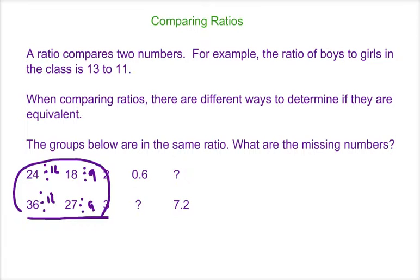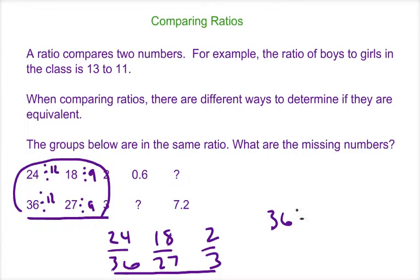Now, how does that help us with the decimals? Something else that we notice about these ratios is that 24 to 36, 18 to 27, and 2 to 3, the bottom number is 1 and a half times the numerator. So 36 divided by 24 is 1 and a half, 27 divided by 18 is 1 and a half, and 3 divided by 2 is 1 and a half.